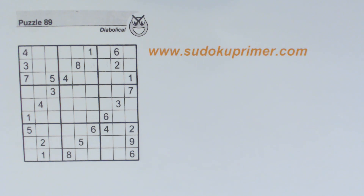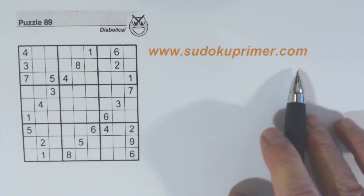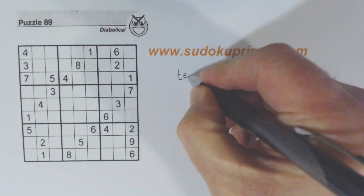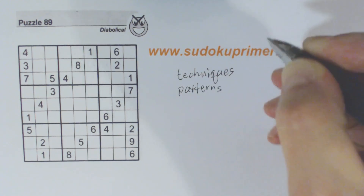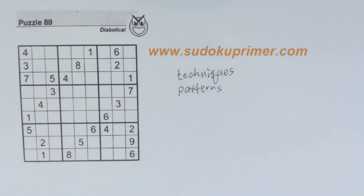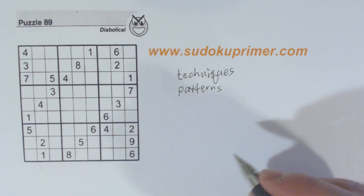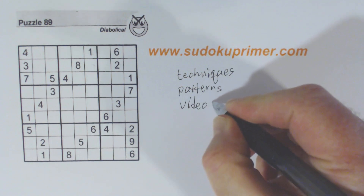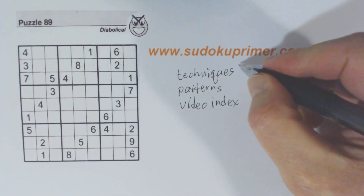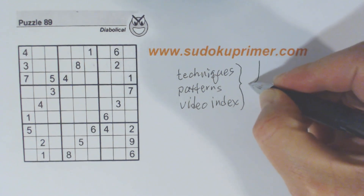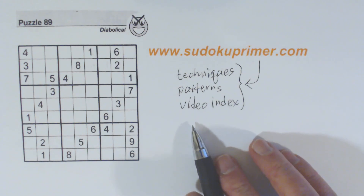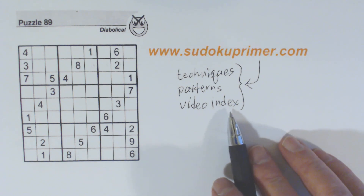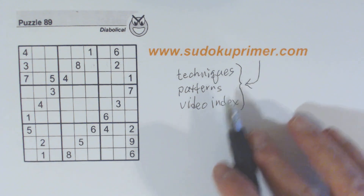There are videos added quite often. I also created the SudokuPrimer.com website. On that website you can find techniques and patterns — things that you can use to help you learn new ways of solving puzzles. It also has a video index, so all these things plus a lot more Sudoku information are on SudokuPrimer.com. You can use the video index to find specific videos with specific topics or skill levels, and search for different techniques and patterns.